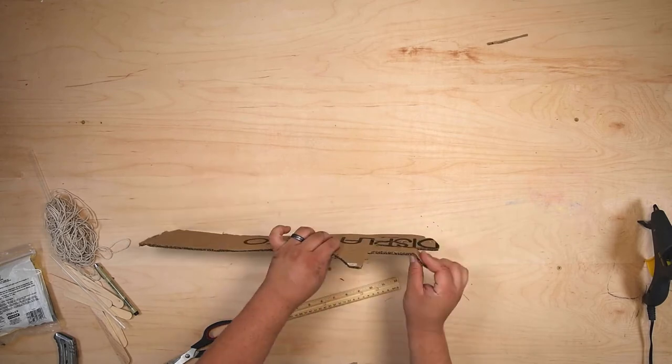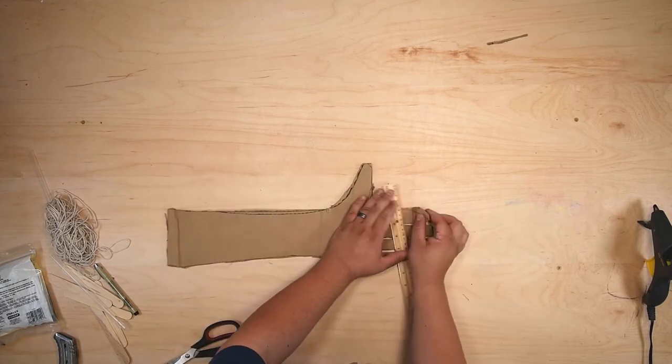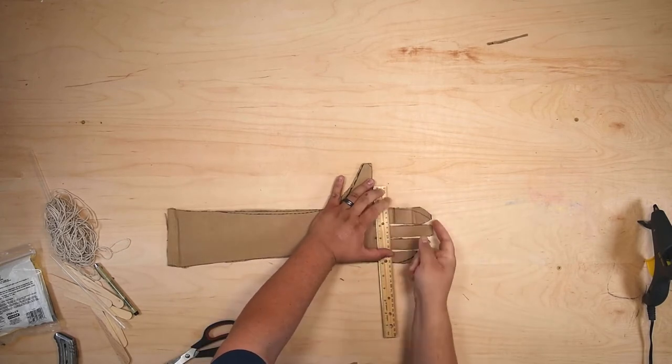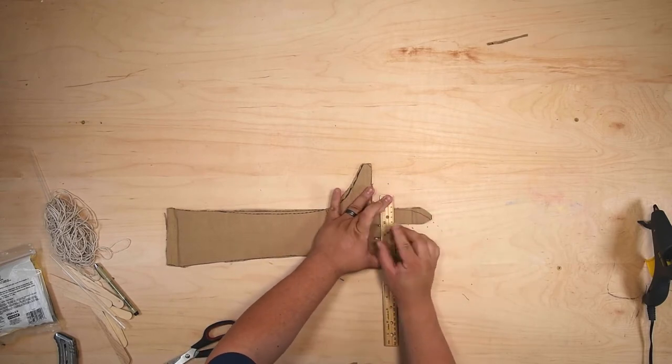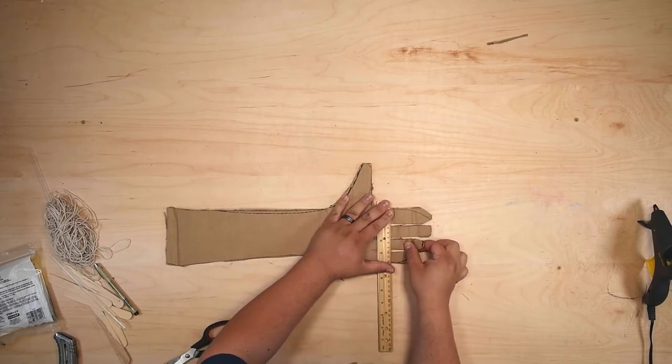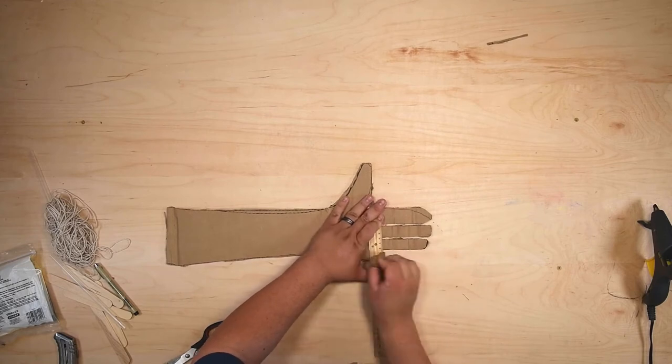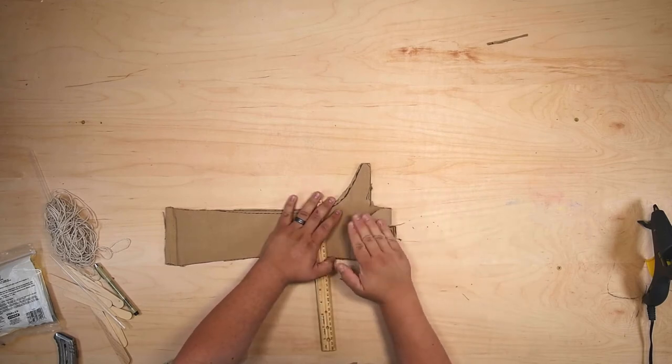Now, just like your regular fingers, your space gauntlet fingers need to have joints on them. And so you want to use a straight edge or something like that to make two bends on each finger, making each one flexible.